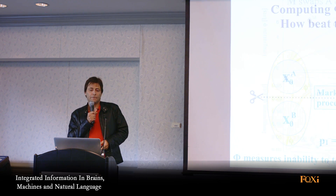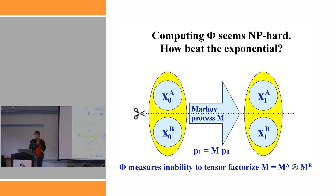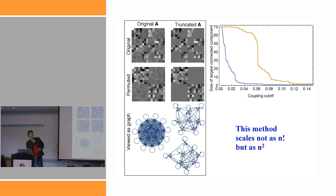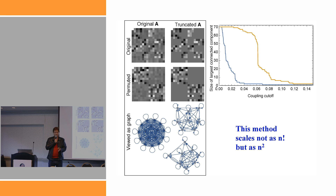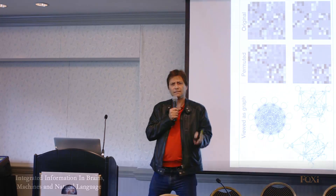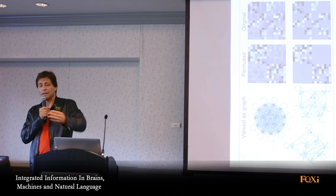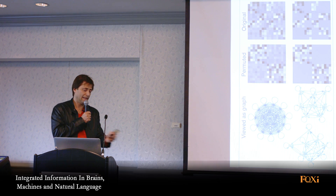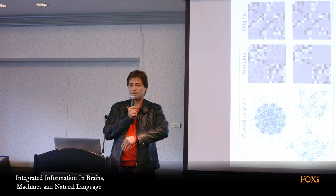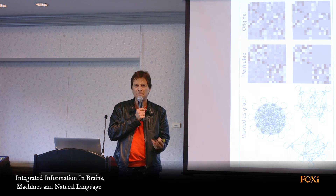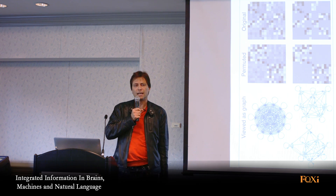Now for some bad news. Even though you can feel good about those formulas, you still can't calculate them in practice. Why not? Because even for a very small dataset, if you have say 70 elements in your system, the number of ways you can subdivide 70 pieces into even two parts is way more than the number of atoms in our universe. So you can keep trying things until hell freezes over and still not be sure you've found the cruelest cut that minimizes phi.